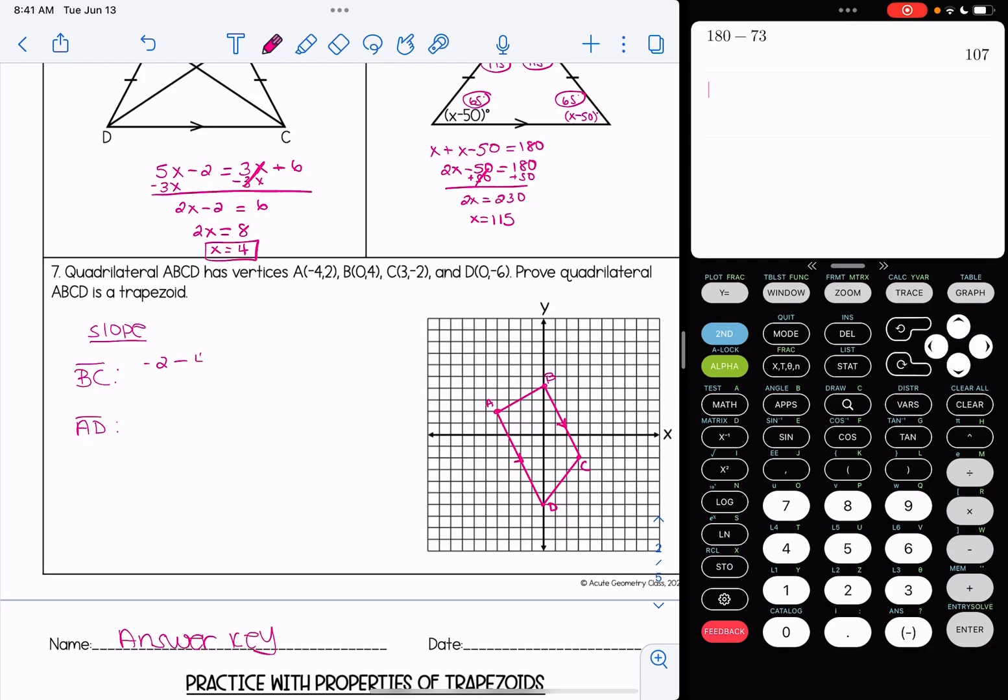Alright, so change in y over change in x. I get negative 6 over 3 or negative 2 as the slope of BC. I would recommend reducing your slopes. I'll show you why in a second. And then I'm going to find the slope of AD.